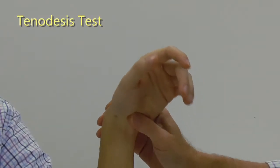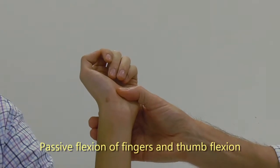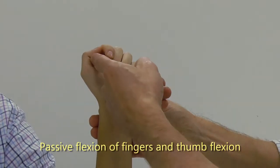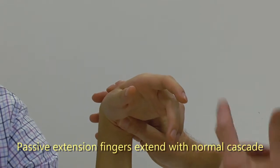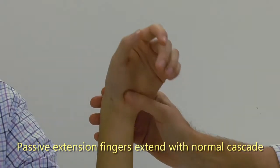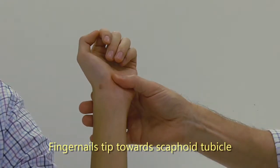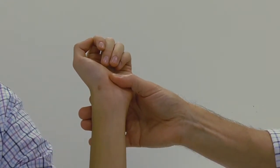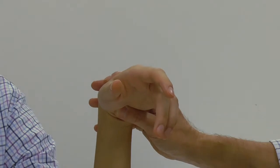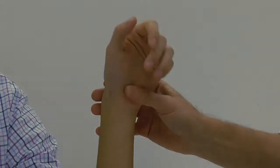The tenodesis test. If we put the wrist into extension, you can see the fingers passively move into flexion. The thumb flexes at the IP joint there. When you put it into extension, then the fingers extend with the normal cascade. And the fingernails point towards the scaphoid tubercle, which is the normal position of the fingers. With the fingers passively flexed and then coming into extension, the fingers passively move with the normal pattern. So this is a normal tenodesis test.